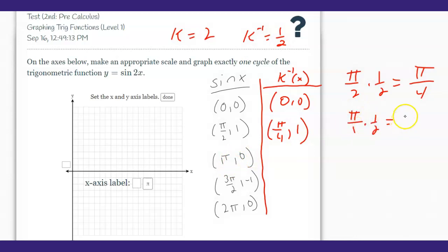That's going to give us pi over two. And then three pi over two times one half is three pi over four. And lastly, two pi times one half is going to be two pi over two, which reduces to pi.